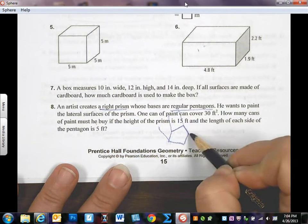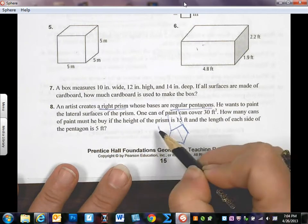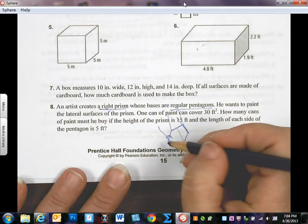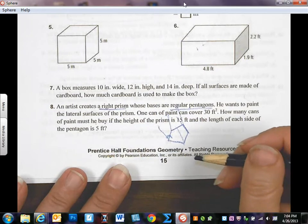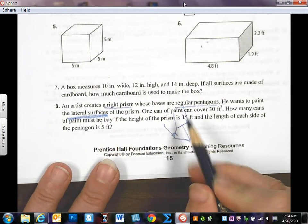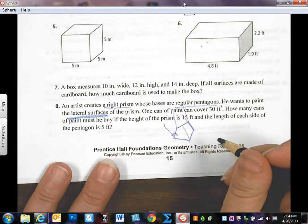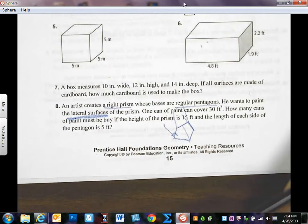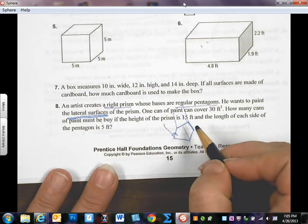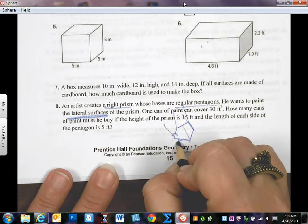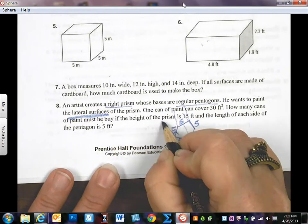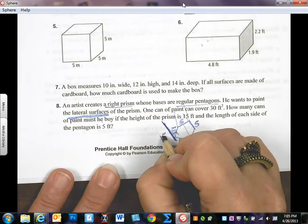So if I were to draw this, I would draw a pentagon. And I would think about this being a prism. What that word right means is that all the heights are going to be perpendicular. There's a right angle here between the vertex and this side coming up. He wants to paint the lateral surfaces. So he's not painting the pentagon top or bottom. He's just going to paint the sides. One can of paint can cover 30 feet squared. How many cans of paint must he buy if the height of the prism is 15 feet high and the length of each side of the pentagon is 5?